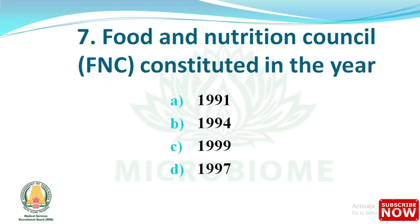Question: Food and Nutrition Council (FNC) was constituted in the year? Options: 1991, 1994, 1999, and 1997. The right answer is option D - 1997.